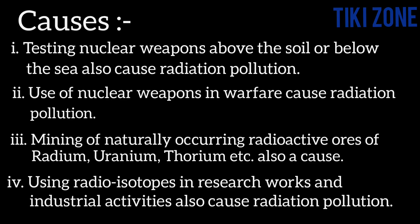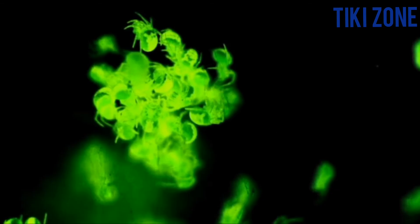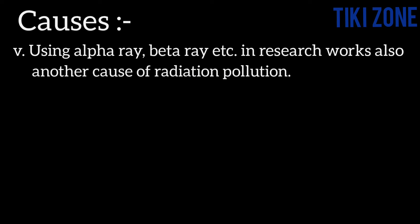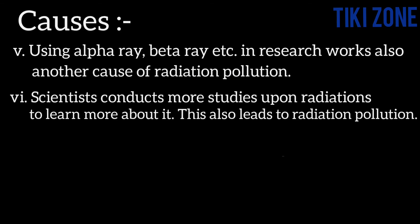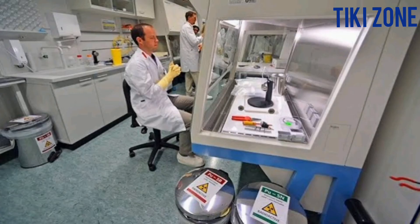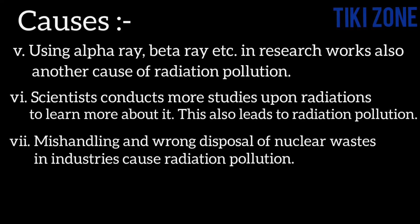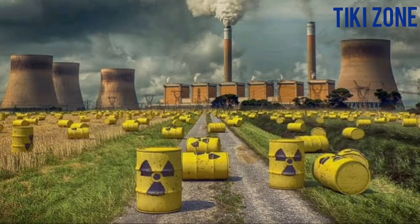Using radioisotopes in research and industries also causes radiation pollution. Using alpha rays, beta rays, etc. in research also causes radiation pollution, because researchers are directly exposed to radiation. Scientists conducting studies on radiation also contribute to radiation pollution. Mishandling and wrong disposal of nuclear waste materials in industry is also a cause of radiation pollution.